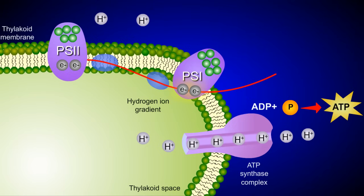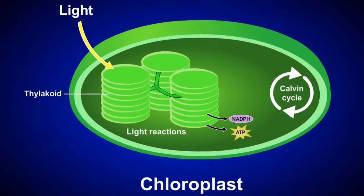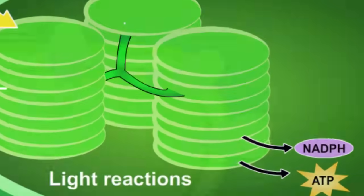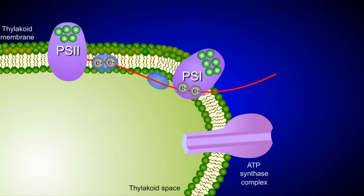Let's zoom back out for a moment and return to our chloroplast. Remember from the beginning of this tutorial that the light reactions produce both ATP and NADPH. We've just seen how ATP is produced, but what about NADPH? Let's zoom back in to take a closer look.